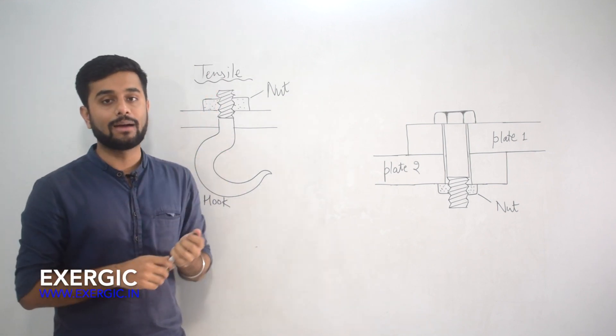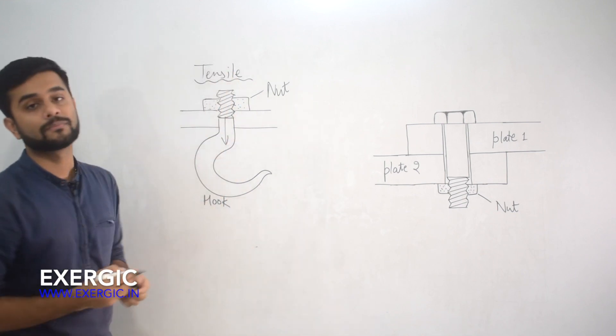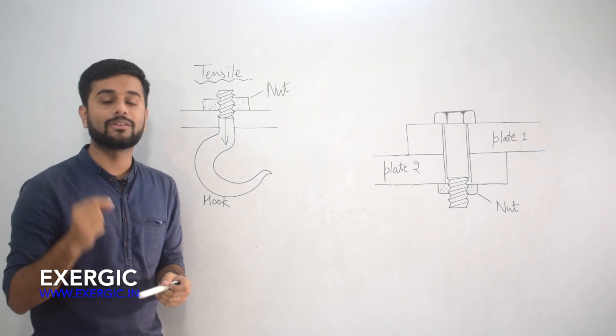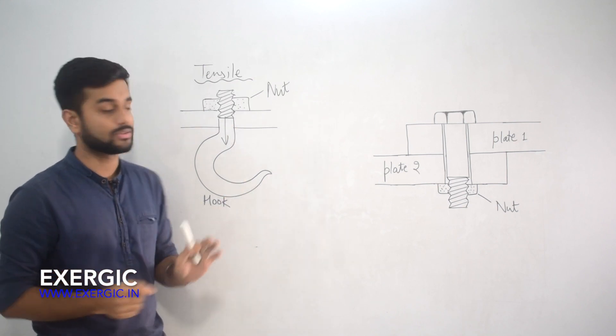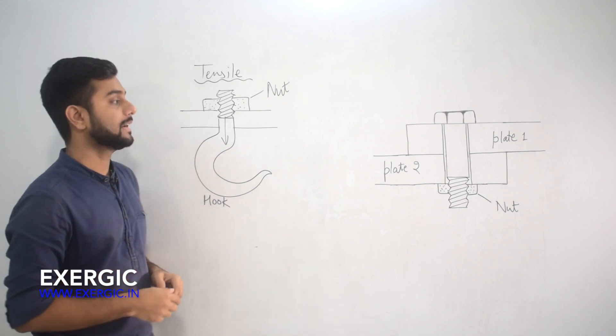In this case, whatever weight will be acting, it will act along this axis. So in this case, the cross-sectional area of the bolt will be subjected to tensile stress. This is one type of load which can act, one type of stress that can get generated.